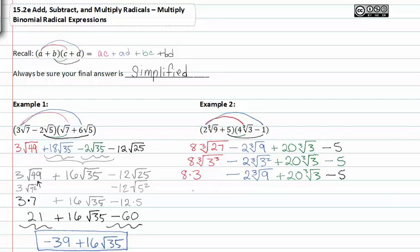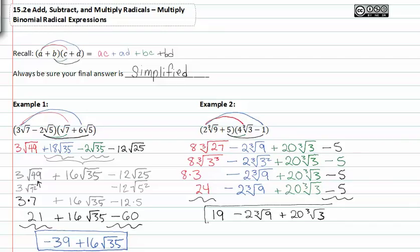Three times eight is twenty-four minus two cubed root of nine plus twenty cubed root of three minus five. Twenty-four minus five are like terms and we get nineteen minus two cubed root of nine plus twenty cubed root of three. And that is my final simplification for that example two.